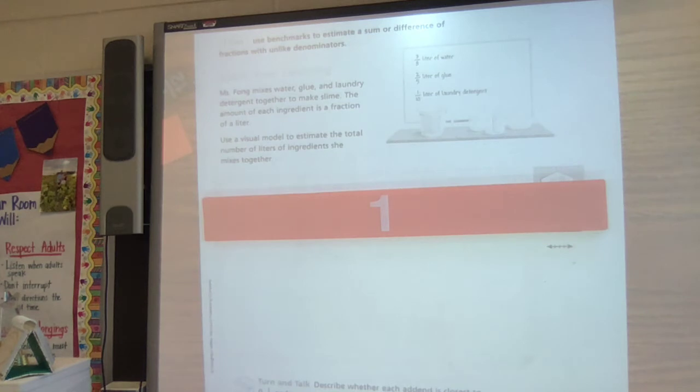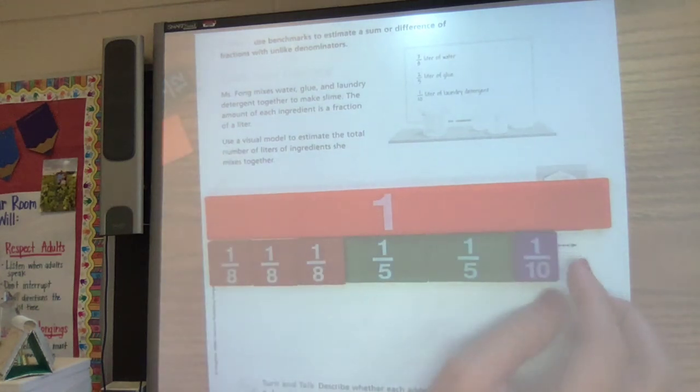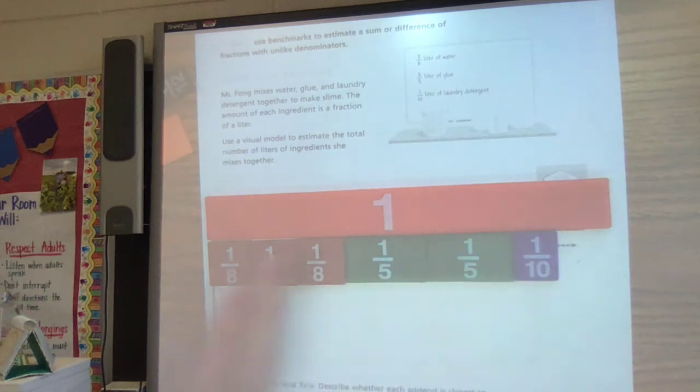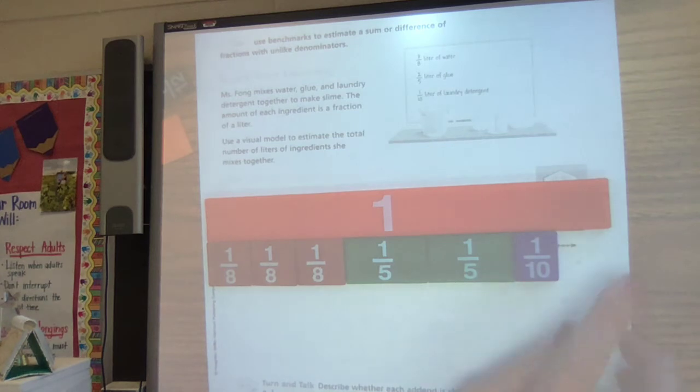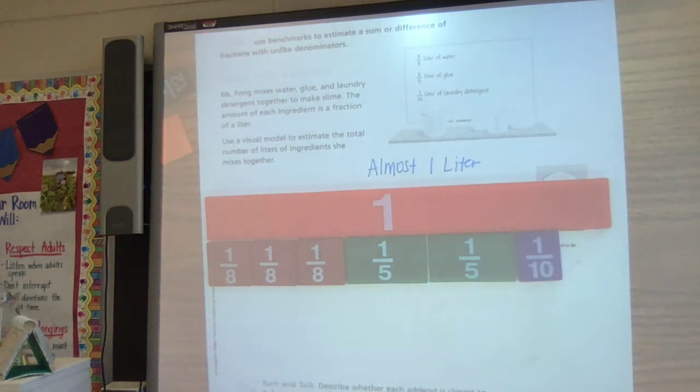So I have three eighths, one, two, three eighths, and a tenth. Okay, now I do not have a common denominator. I'm not sure what the exact answer is, but my question said estimate the total number of liters. So it's almost one. I would say one is a good estimate. It's almost one.